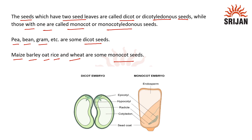Here in this image we can see that the first seed is the dicot seed because it has two cotyledons, whereas the second seed is the monocot seed because it has one cotyledon.